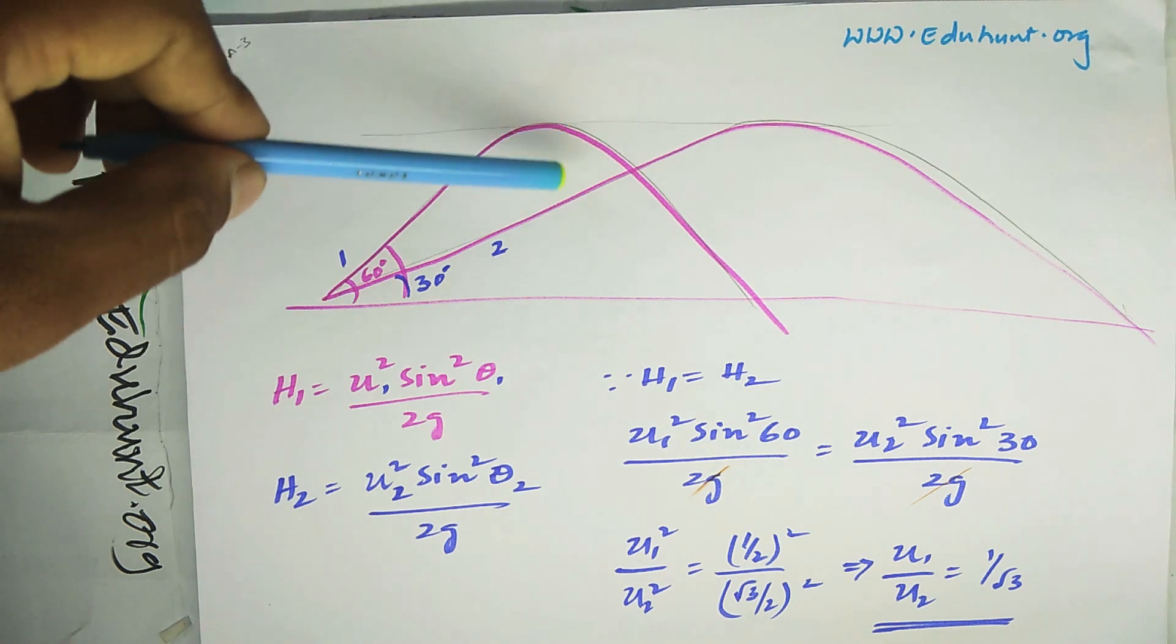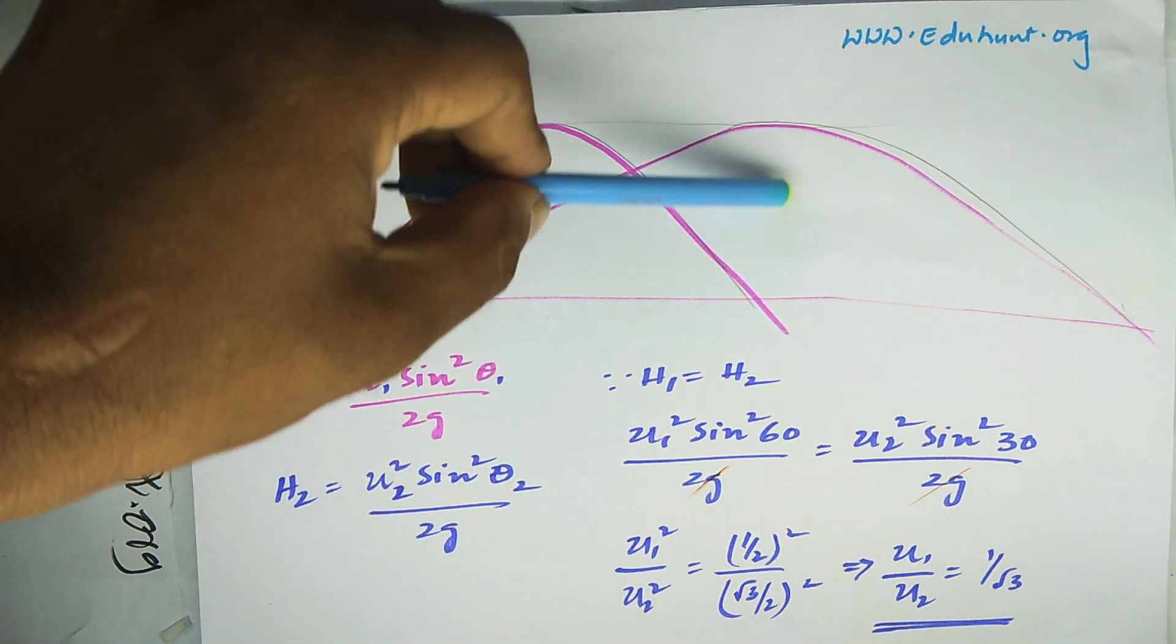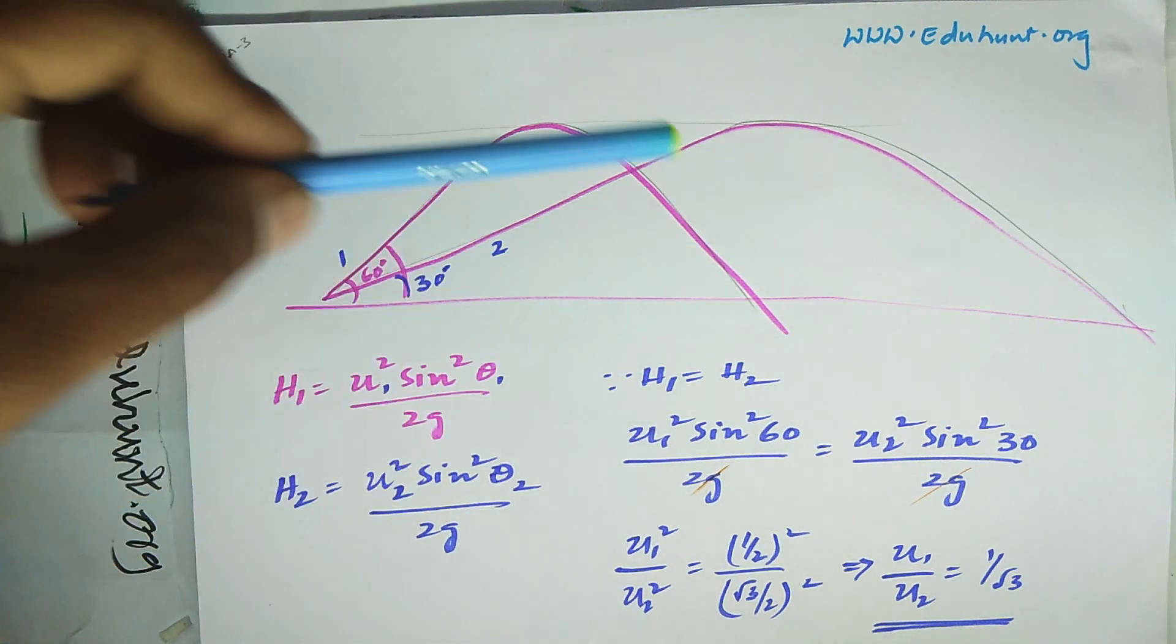The height attained by the first body and the max height attained by the second body are the same. h1 equals h2.